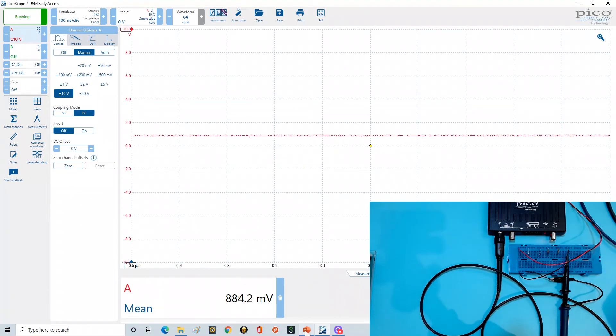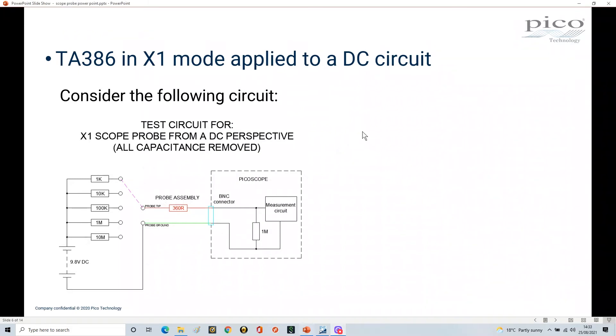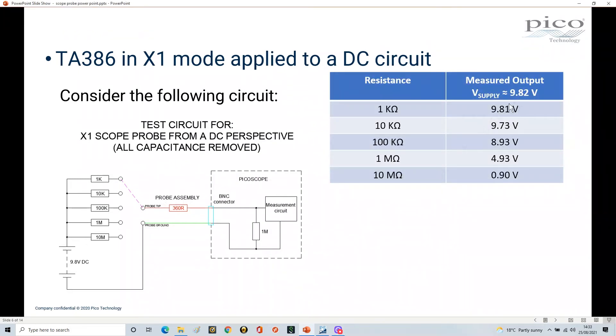This is the test we've been doing and I've tabulated those results. You can see there's a supply voltage of approximately 9.82. I did fill this in earlier, so these numbers may vary a little bit from what we just went through. When you monitor at 1K, the voltage seen by the Picoscope at this point is 9.81 volts. Similarly at 10K, we've got 9.72; 100K is 8.93; 1 meg is 4.93; and at 10 megs we've got 0.9.